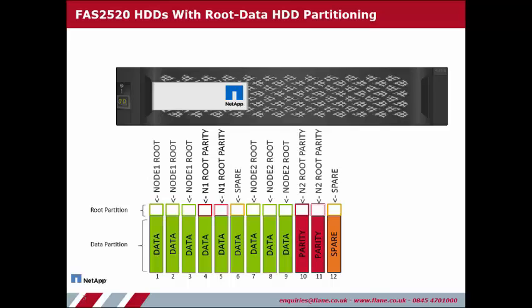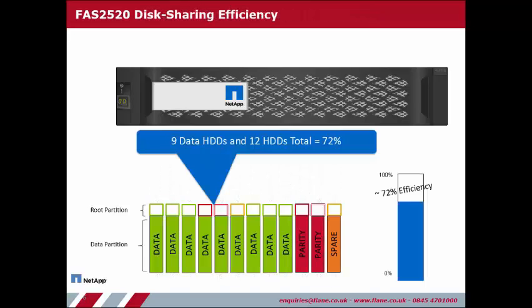As you can see, using this method, 11 data partitions can now be created, 9 for data and 2 for the RAID DP parity, with 1 slice remaining as a spare. Keep in mind that this example uses an active-passive configuration. An active-active configuration would require 2 data aggregate portions from the 12 data partition slices. Our efficiency is now up to 72%.